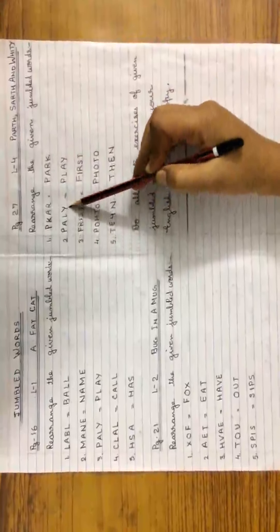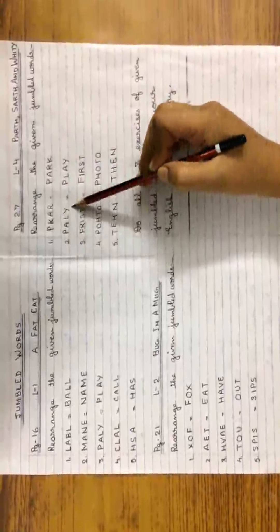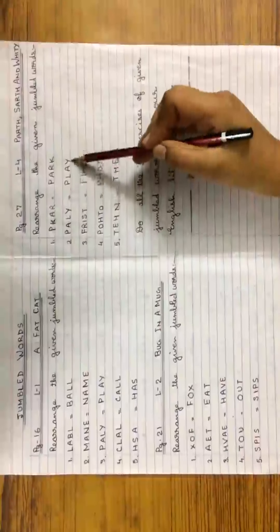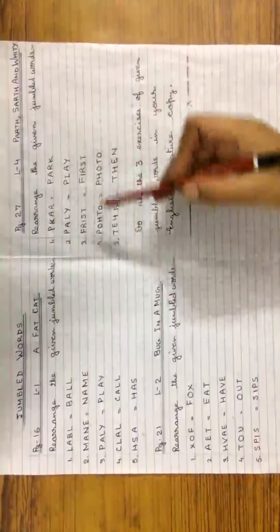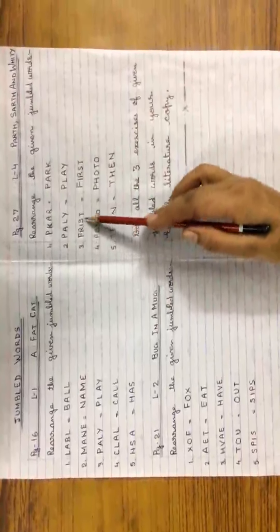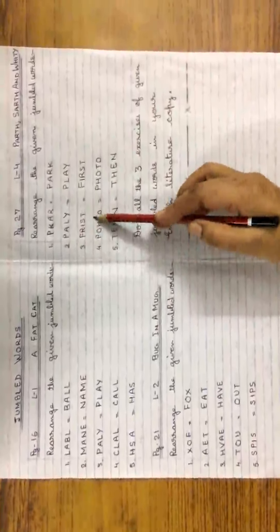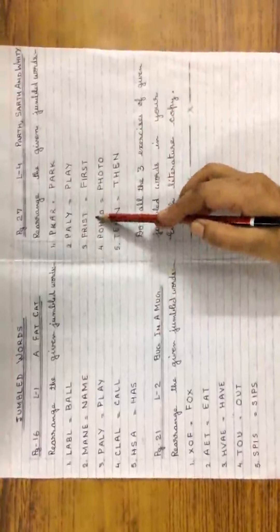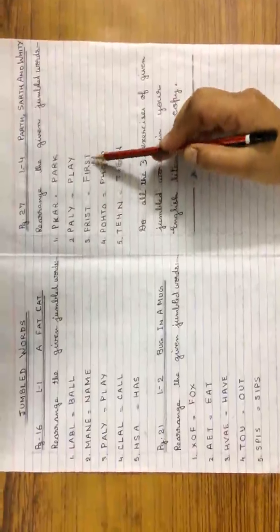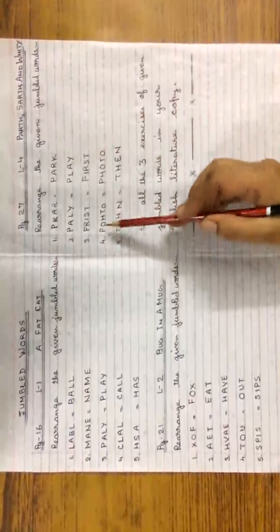Number 2: P-A-L-Y. A set of jumbled alphabets without any meaning. And P-L-A-Y — play, a meaningful word. Number 3: F-R-I-S-T. A set of jumbled alphabets without any meaning. And F-I-R-S-T — first, a meaningful word.